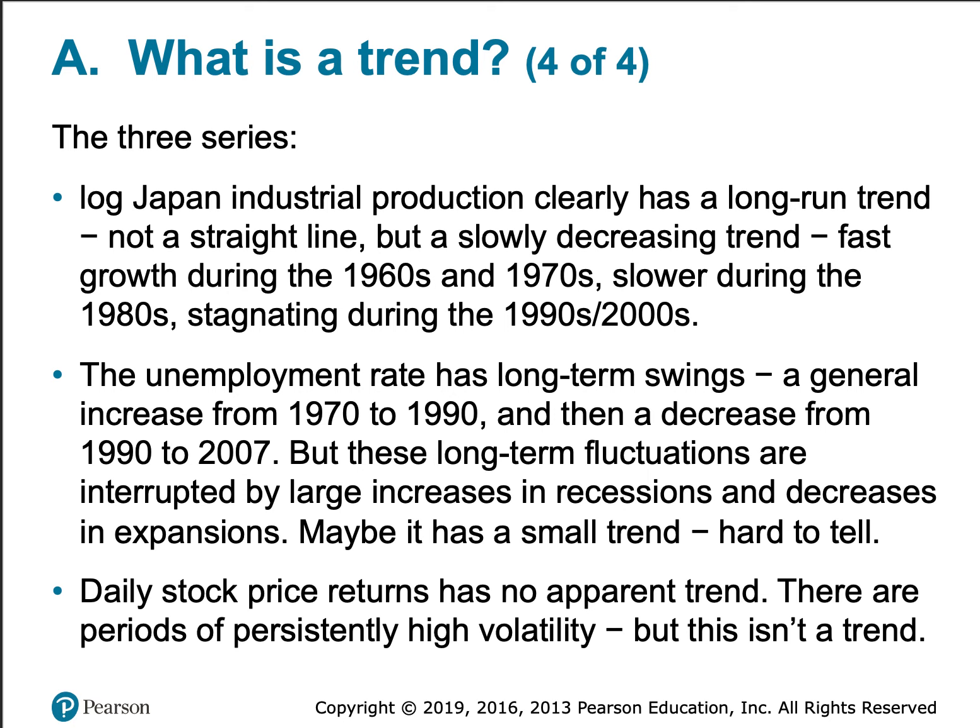The United States unemployment rate has long-term swings. We saw a general increase from 1970 to 1990 and then a decrease from 1990 to 2007, but these long-term fluctuations are interrupted by large increases due to recessions and decreases during expansions. So there may be some small trend, but it is hard to tell — we would need to carry out statistical tests to prove to ourselves whether or not there is a trend.